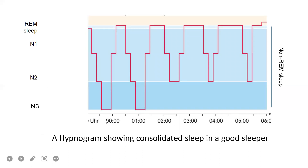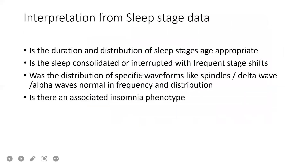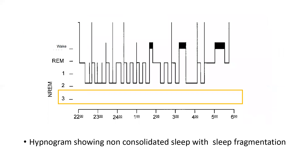Let's look at this hypnogram, which shows consolidated sleep in a good sleeper. Stages N1, REM, N2, and N3 are all present one after the other four to five times during the course of the night, and no fragmentation is seen — this is consolidated sleep. Compare it with this hypnogram of a person with fragmented or disturbed sleep. Here there are lots of wake after sleep onset, the patient doesn't reach deep sleep at all, sleep stage shifts are quick, and the sleep is not consolidated.